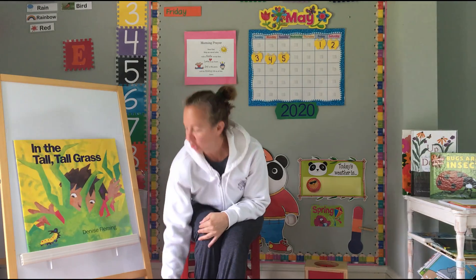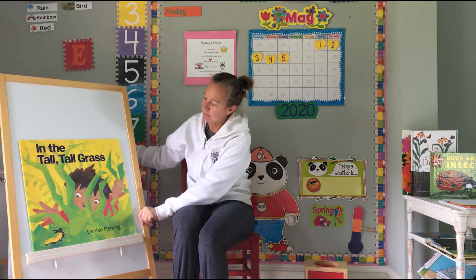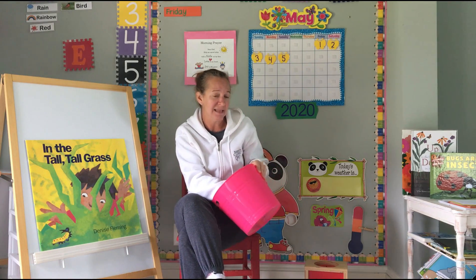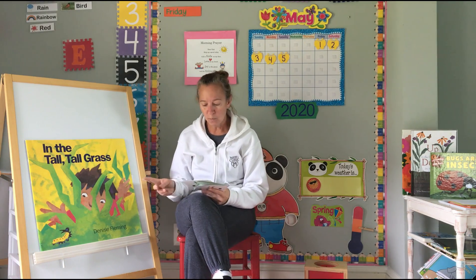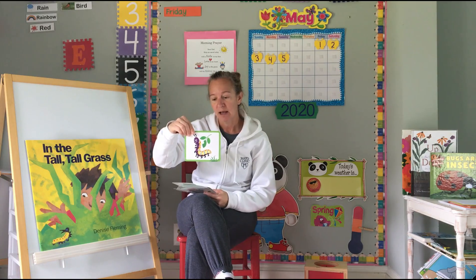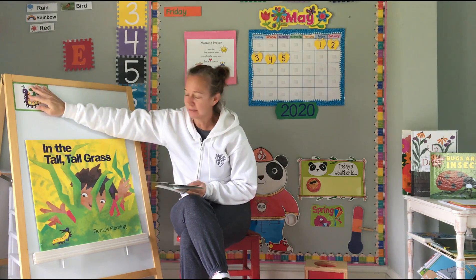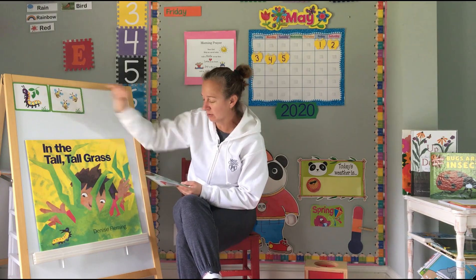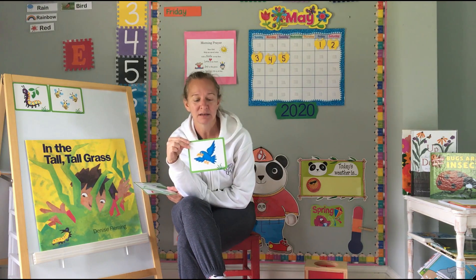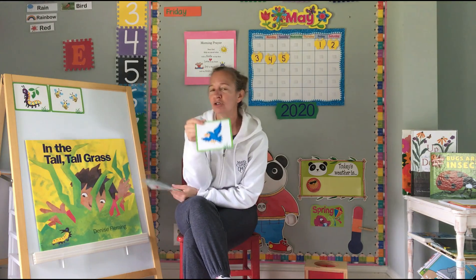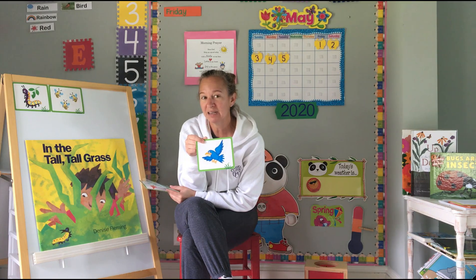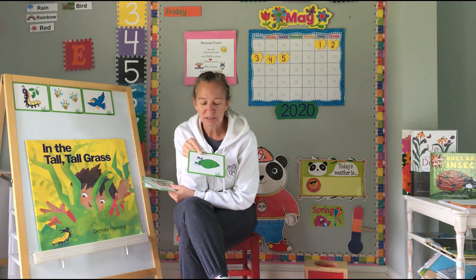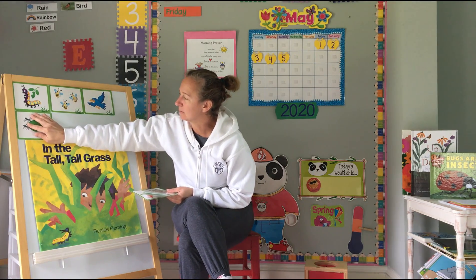Today we're going to read a book called 'In the Tall Tall Grass.' When you look at grass outside, what do you think you see? What could be near the grass? We have a caterpillar — we see caterpillars in the grass. Sometimes we see bees flying around, especially if there are beautiful flowers near them. And birds — we see birds in the grass! Do you know what they're looking for? Worms. And we have two tiny ants trying to eat some grass or leaves.